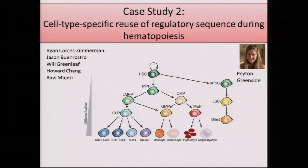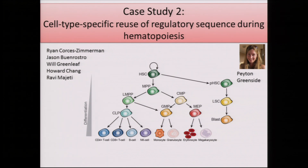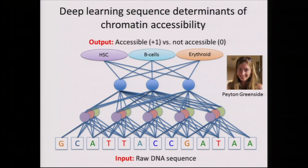I'd like to move on to what we consider the most exciting application: dissecting context-specific reuse of regulatory motifs. This is work done by Peyton Greenside in collaboration with Will Greenleaf, Howard Chang, and Ravi Meheti. Peyton is predicting accessibility across the hematopoietic lineage from sequence — her input is raw DNA sequence and her output is which cell types it is accessible in. The example involves hematopoietic stem cells (HSCs), B cells, and erythroid cells.